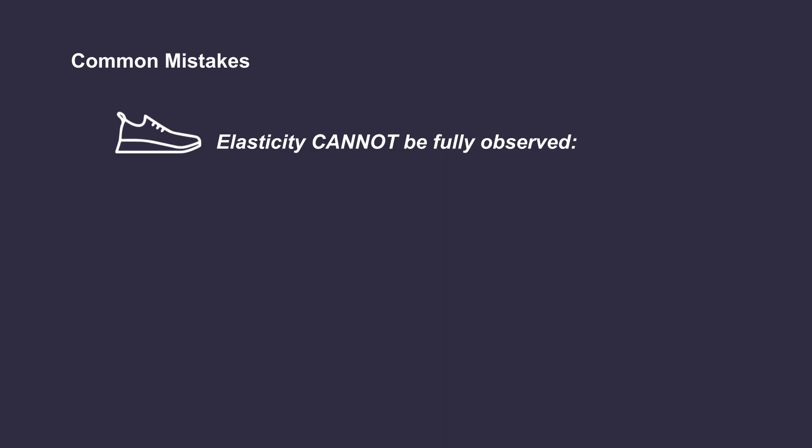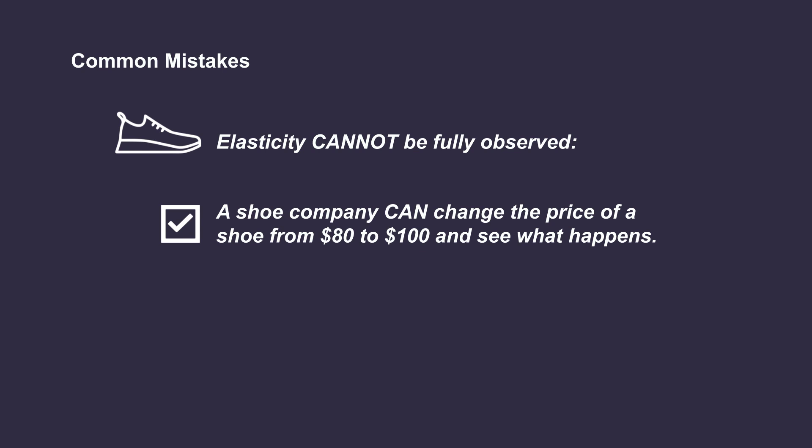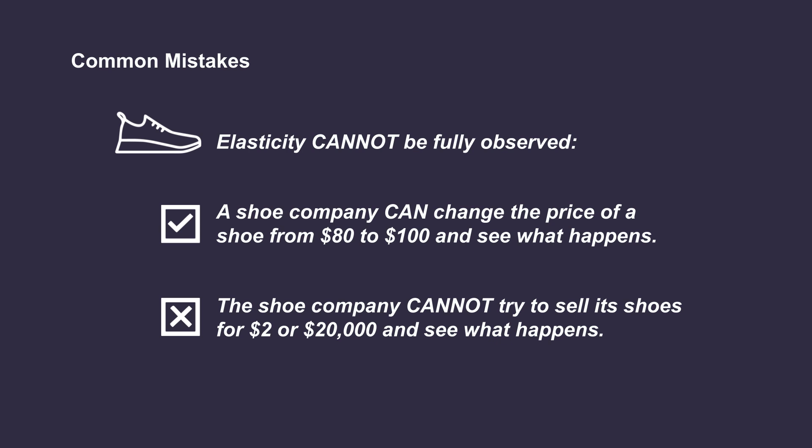Second common mistake: elasticity can be fully absurd. A shoe company can change the price of a shoe from $85 to $100 and see what happens with demand, but it can't realistically try to sell shoes at $2 or $20,000 and see what happens. The problem is that when a company moves the price up or down, it has never observed before what happened to demand. If I decrease massively the price of the shoes, I expect demand to increase even more massively, thereby increasing profits — but I am not sure of it, thereby taking a risk. This is why, since demand is largely unobserved, producers will generally move prices slowly.